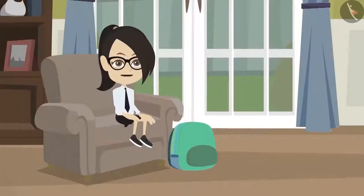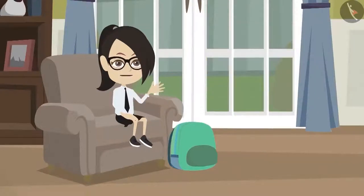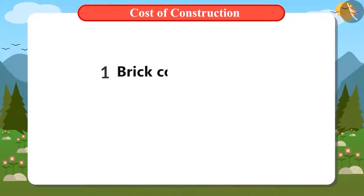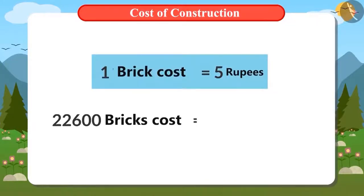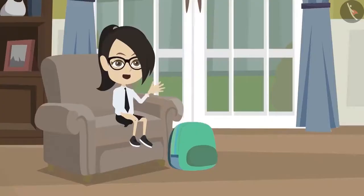Now we know that a total of 22,600 bricks will be used. First, let's find how much they would cost us. A brick costs 5 rupees, so to find the value of 22,600 bricks, we will multiply 22,600 by 5. Let's multiply.